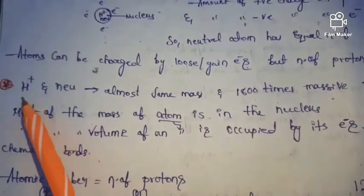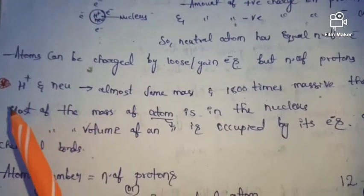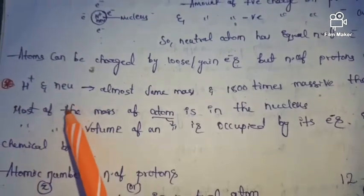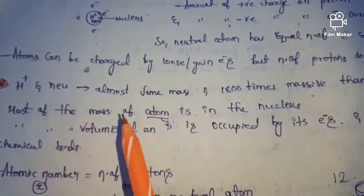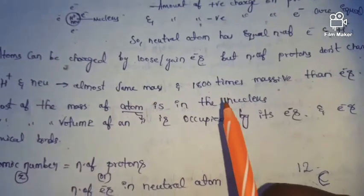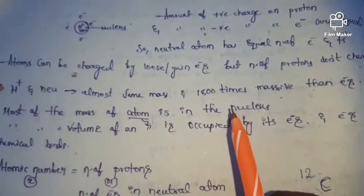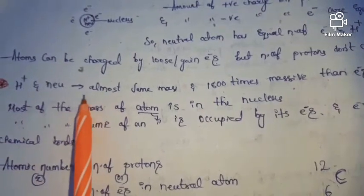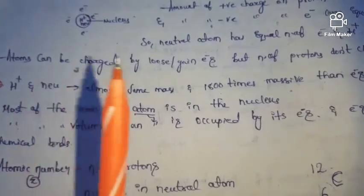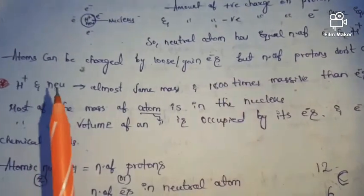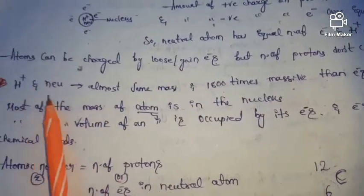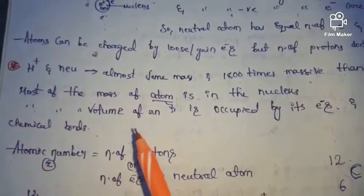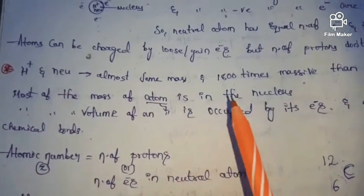Protons and neutrons have almost the same mass, and they are 1800 times more massive than electrons. Usually we say that protons and neutrons have almost the same mass, but when compared to electrons, they have 1800 times more mass. Most of the mass of the atom is in the nucleus.